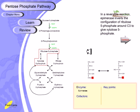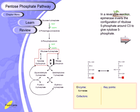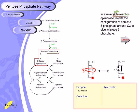The reactions seen so far — three steps — are all irreversible. From the fourth step onward, all steps are reversible. The fourth step: epimerase inverts the configuration of ribulose-5-phosphate around carbon C3 to give xylulose-5-phosphate. This is simply an epimerization — the hydroxyl group flips to the opposite orientation at carbon three, and the enzyme involved is epimerase.